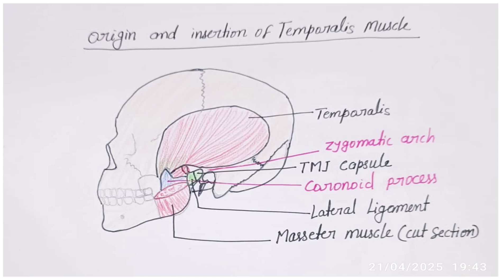Anterior fibers run vertically, middle fibers run obliquely, and posterior fibers run horizontally. All fibers converge and pass through the gap deep to the zygomatic arch. Anterior fibers elevate the mandible and posterior fibers help retract it.